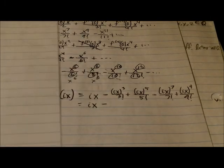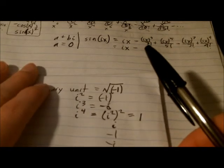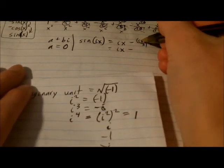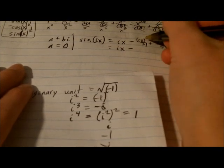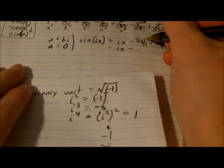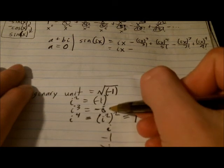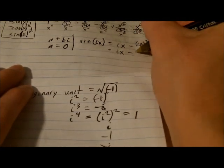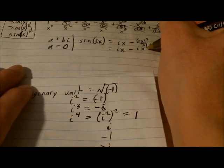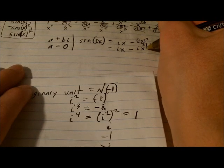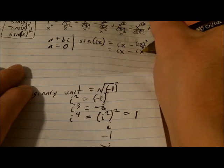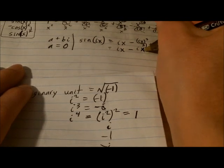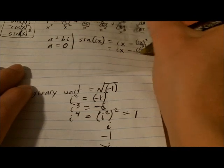Okay, now we know i to the third, so i to the third is our coefficient of the second term. And we know right here, i to the third equals negative i, so we'll just say minus i x, and now, just this variable x has a cube on it, so it's i, quantity x to the third, over three factorial.